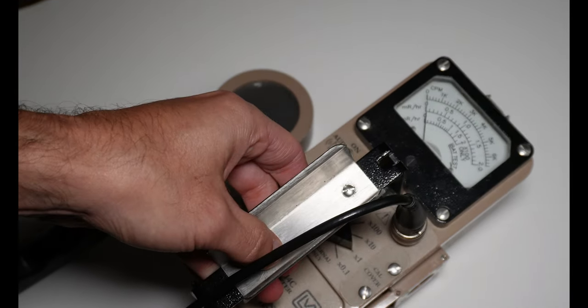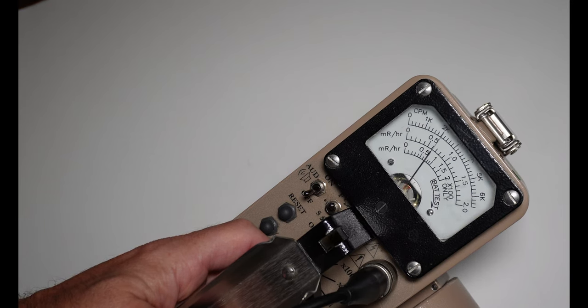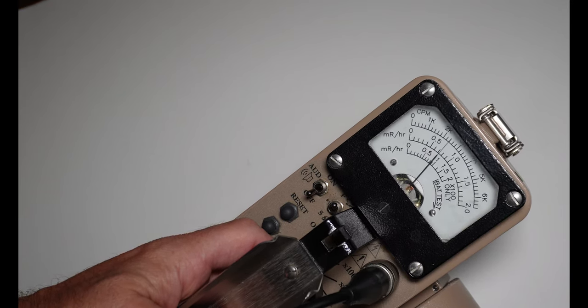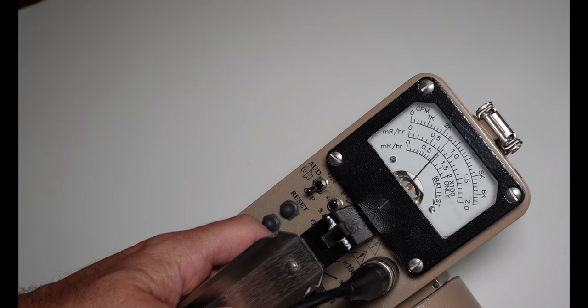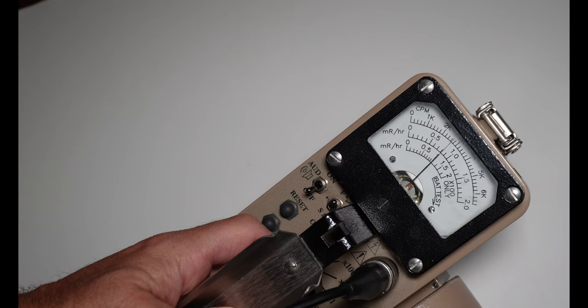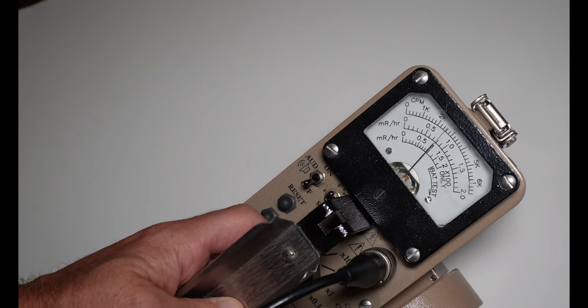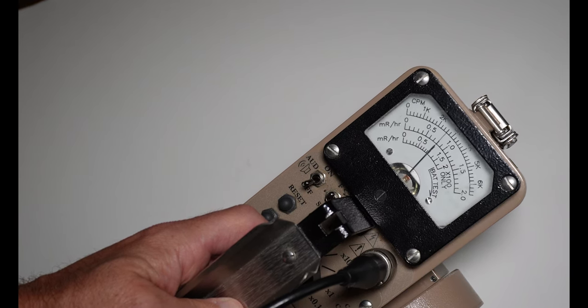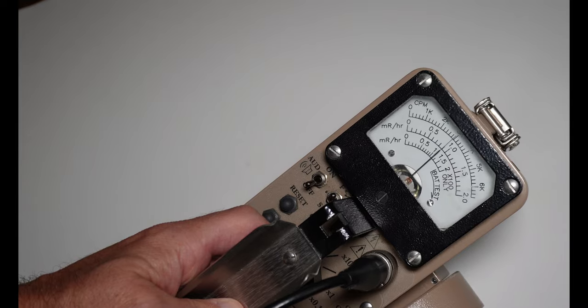So if I check the check source, since we have our knob set to times 0.1, we're going to read off of that middle scale, and we see that the needle is deflecting to about 0.8. And since we're on the times 1 scale, then it's a direct read. So our measurement here is 0.8 MR per hour.